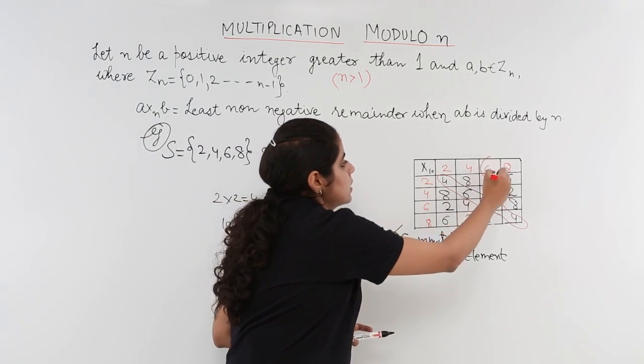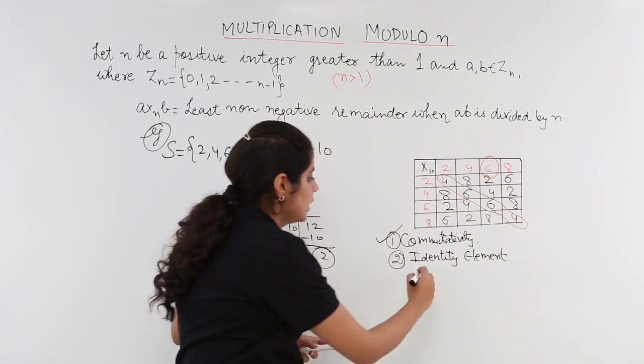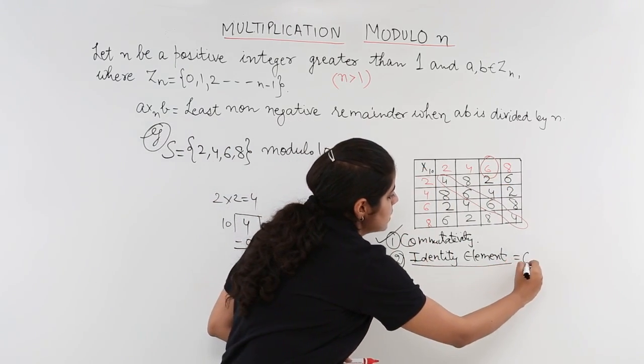So 6 has 2, 4, 6, 8 here. Also I have 2, 4, 6, 8. That means the identity element here is 6. Last but not the least in this video we need to find out what are the invertible elements, the inverse of the elements.